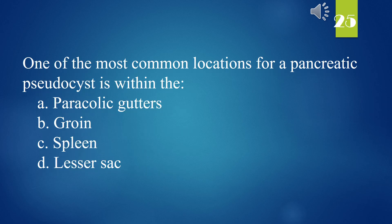One of the most common locations for a pancreatic pseudocyst is within the: A. Pericolic gutters. B. Groin. C. Spleen. D. Lesser sac. The answer is D. Lesser sac.